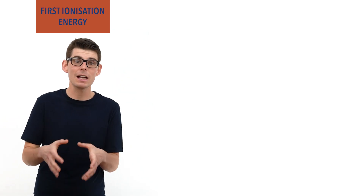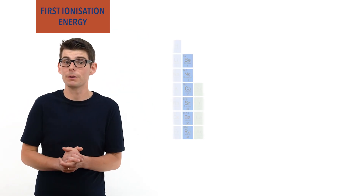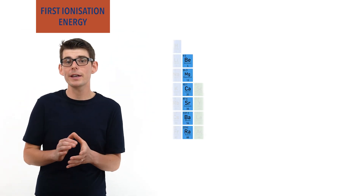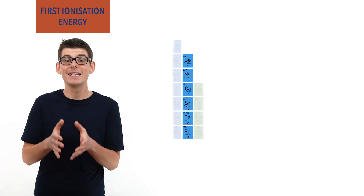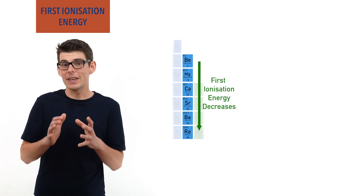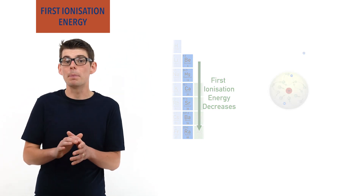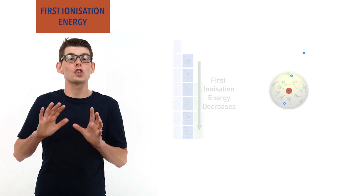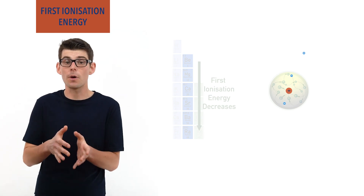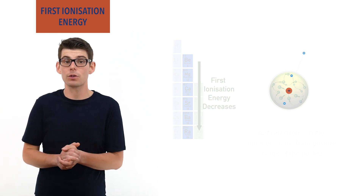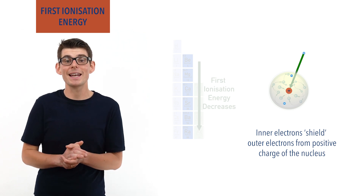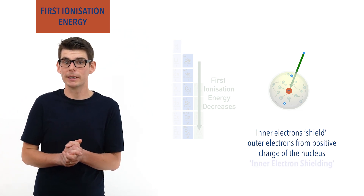As you go down a group in the periodic table, the first ionization energies of the elements decrease. The inner electrons in an atom block or shield the positive charge of a nucleus from the outer electrons. This is referred to as inner electron shielding.